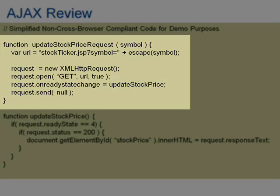The third parameter is a Boolean — either true or false — and note that it's not placed inside quotes. True means this is an asynchronous request. And obviously, if we're doing AJAX, we probably want it to be asynchronous, so for the most part you'll always write true. If for some reason you want to block — if you want a synchronous request that can't move on until the response comes back — then you'd want to set that third parameter to false.